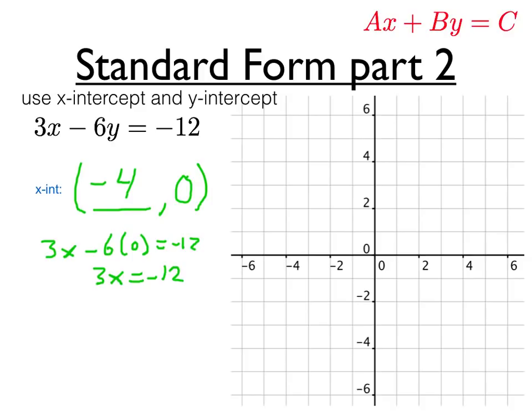To find the y-intercept, we'll do something similar, except we'll set x equal to 0. If negative 6y is equal to negative 12, that means y is equal to 2.